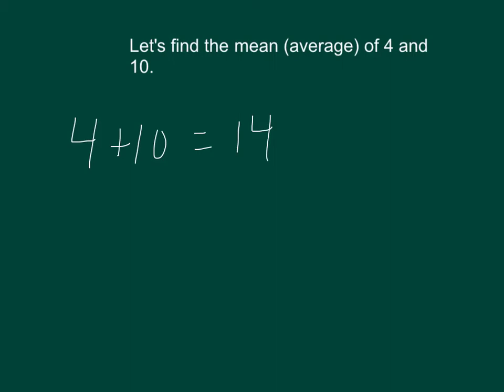The next step is to take that number and divide by how many numbers we added. We took our answer and divided by 2 because there were two numbers. 14 divided by 2 is 7. So 7 is the average of 4 and 14.